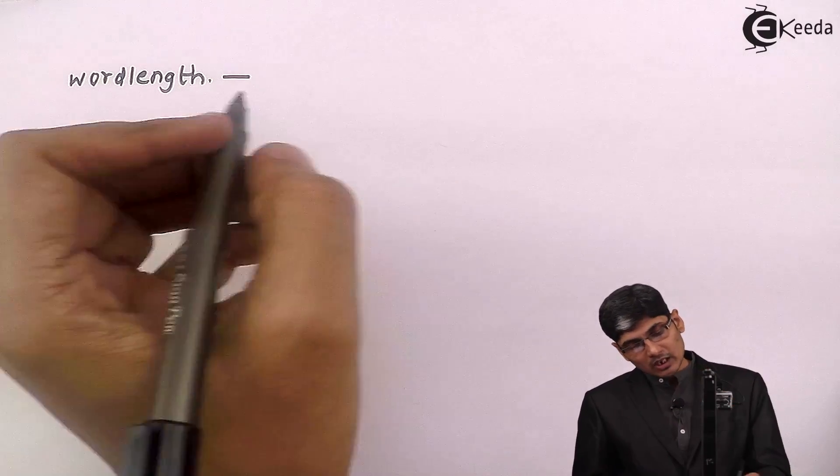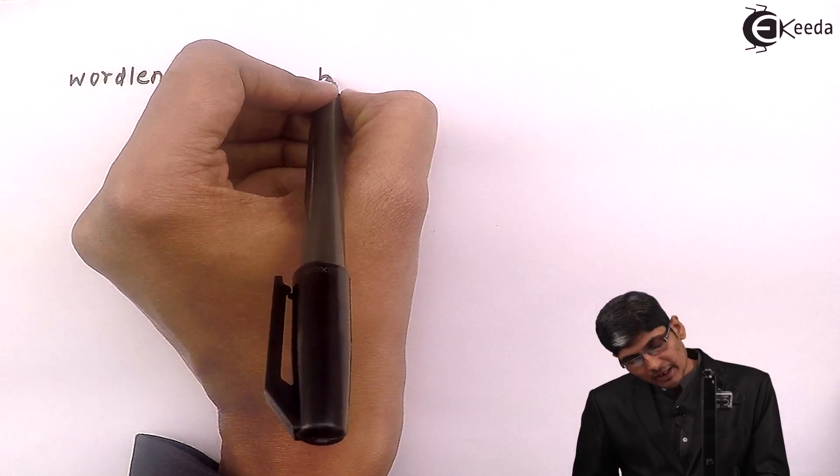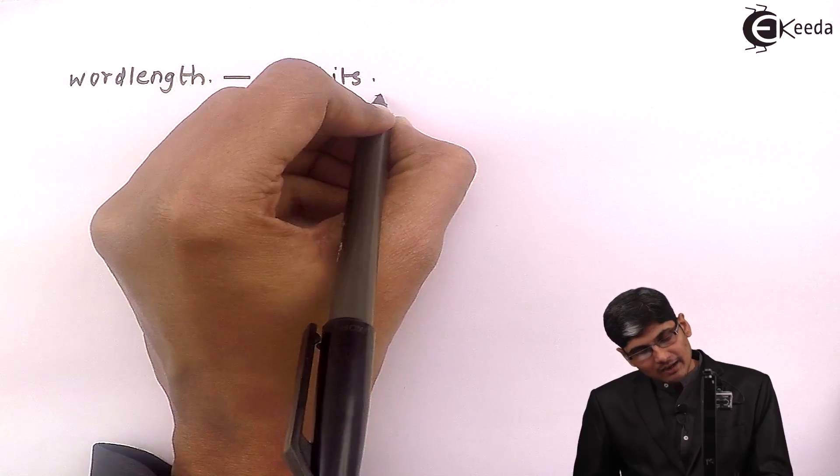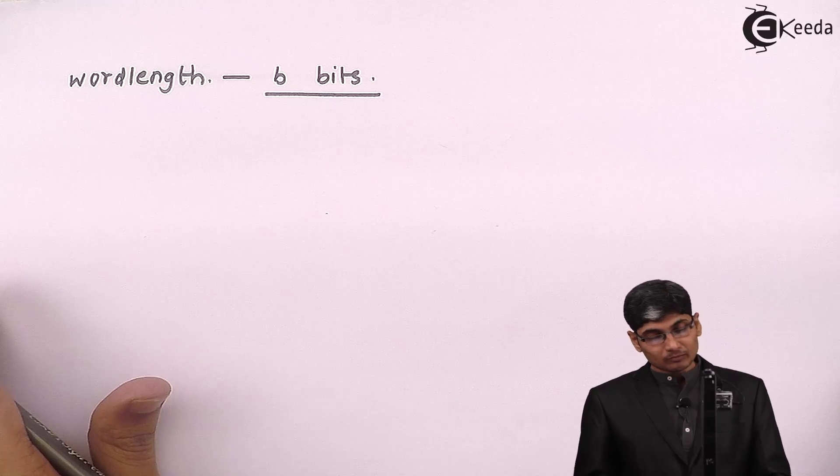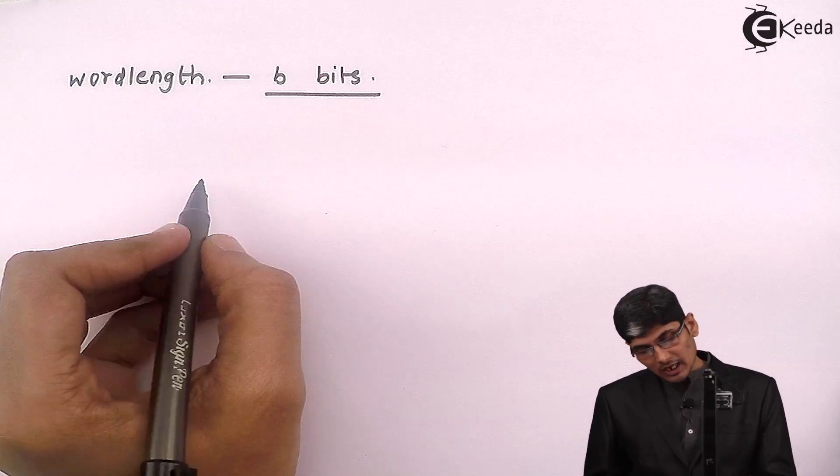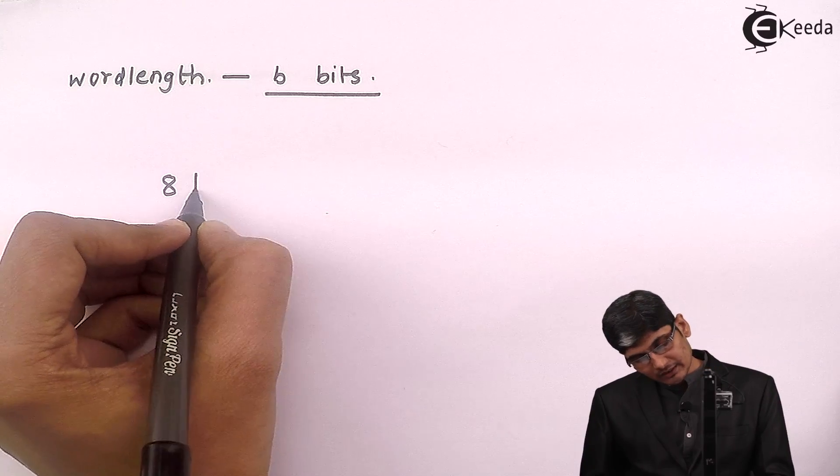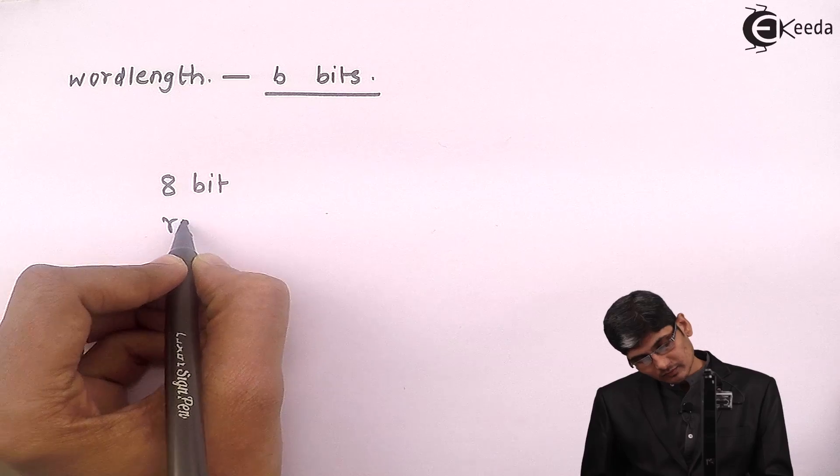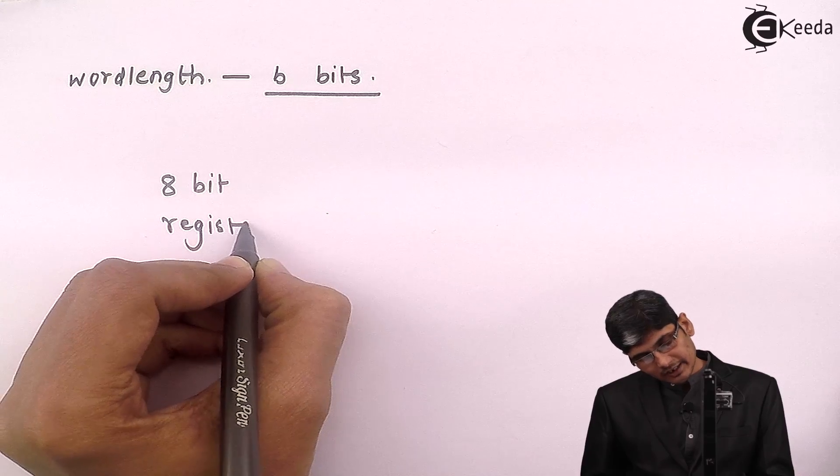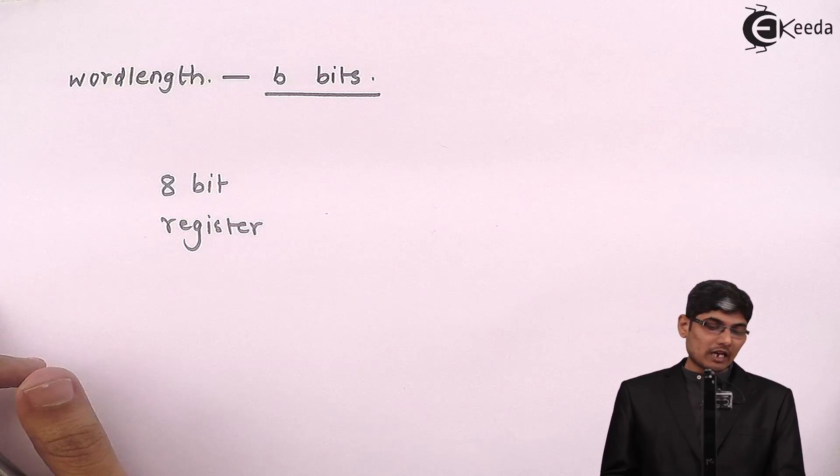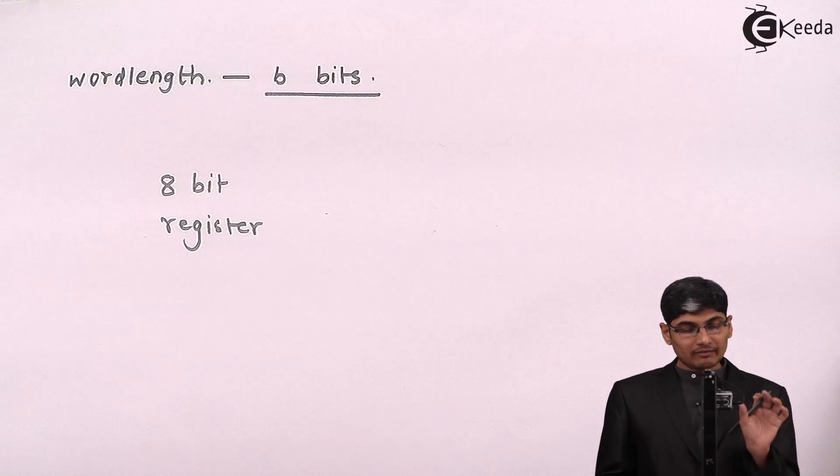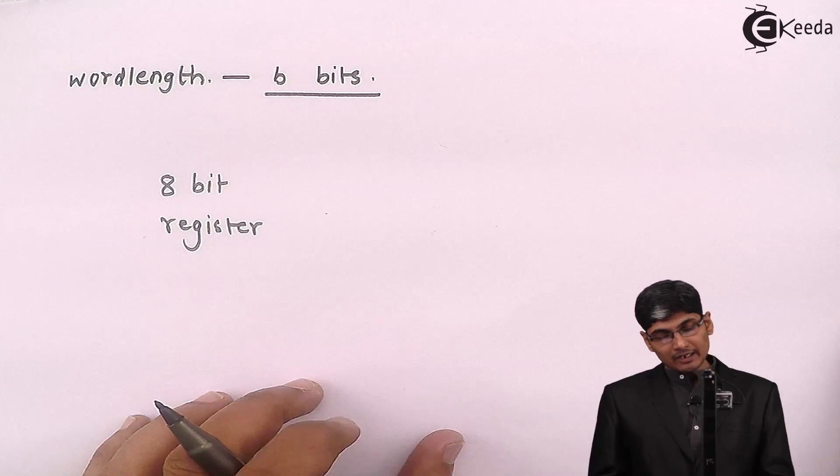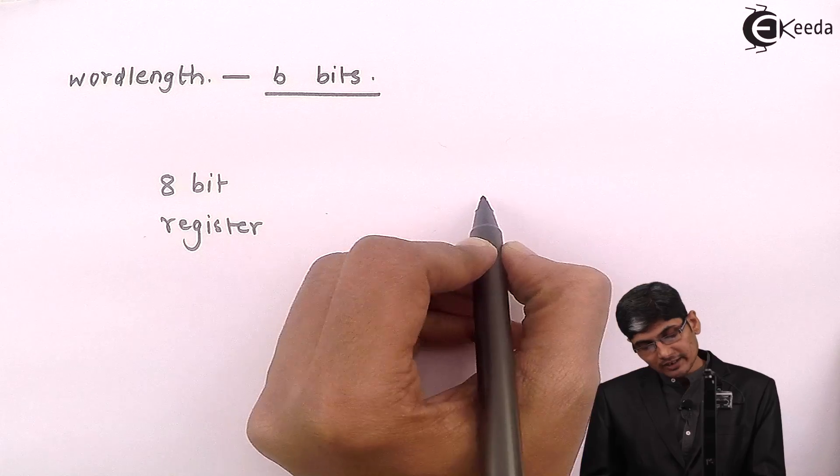Normally the word length is defined as b bits, that means I have total b bits in a word length. So if suppose I have an 8-bit register, let's take an example that I am working with an 8086 family processor and I have an 8-bit register and my number is of let's say 10 bits.